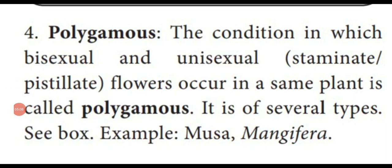Dear students, the last type of plant sex is polygamous. Polygamous means different sex organs are present in the individual plant. That means bisexual flower and unisexual flower — that is staminate flower or pistillate flower — occur together in the same plant. That is known as polygamous. Examples: Musa and Mangifera. Mangifera is the binomial name of mango. Musa is the binomial name of plantain tree.